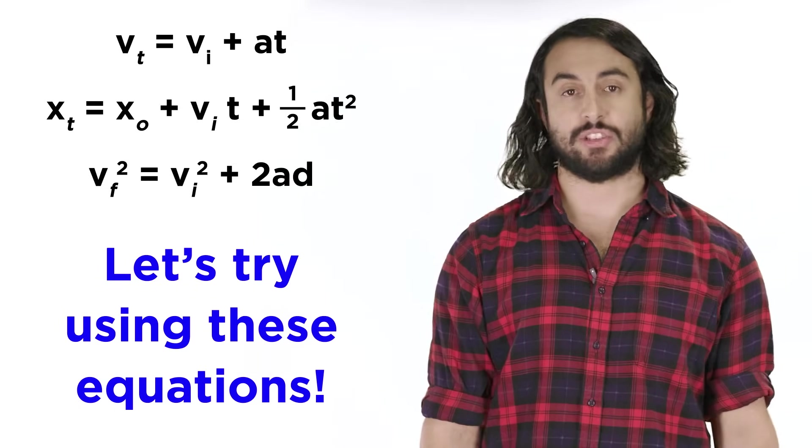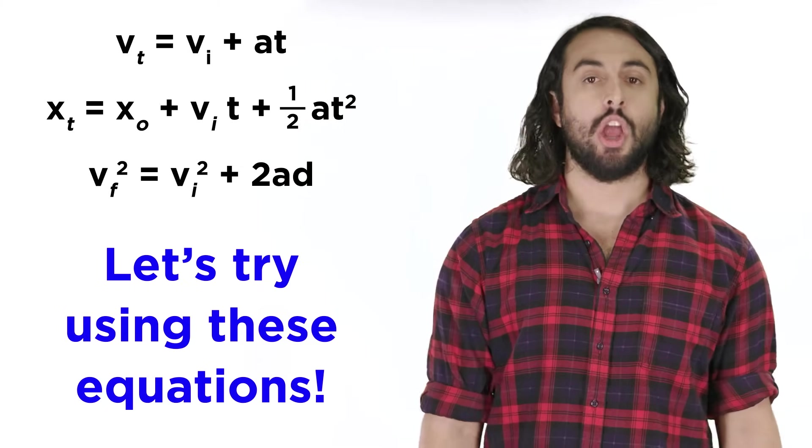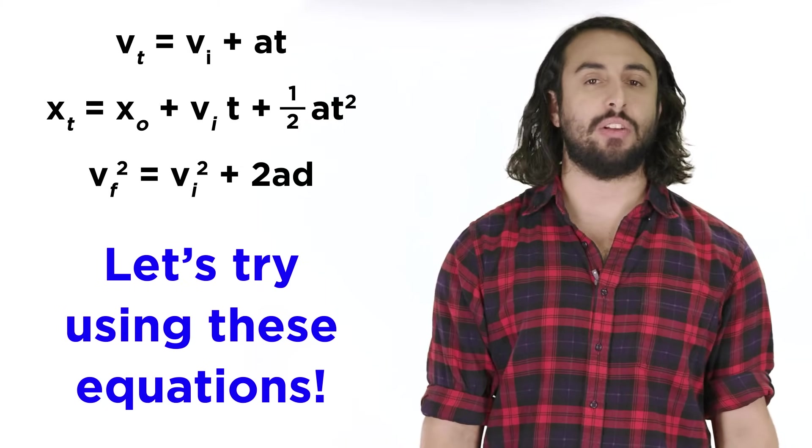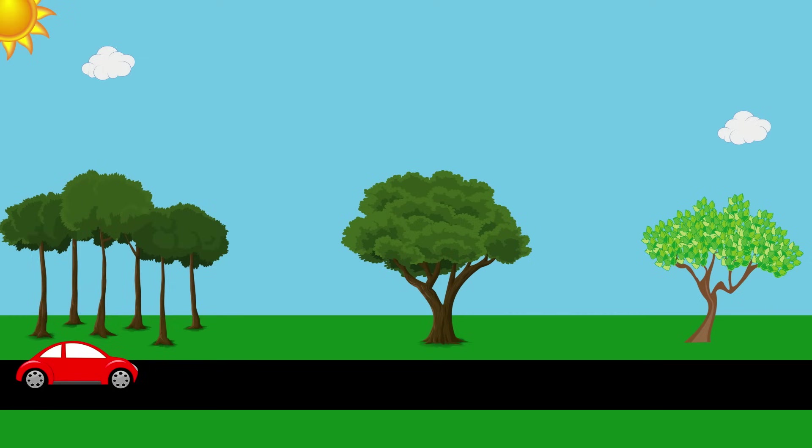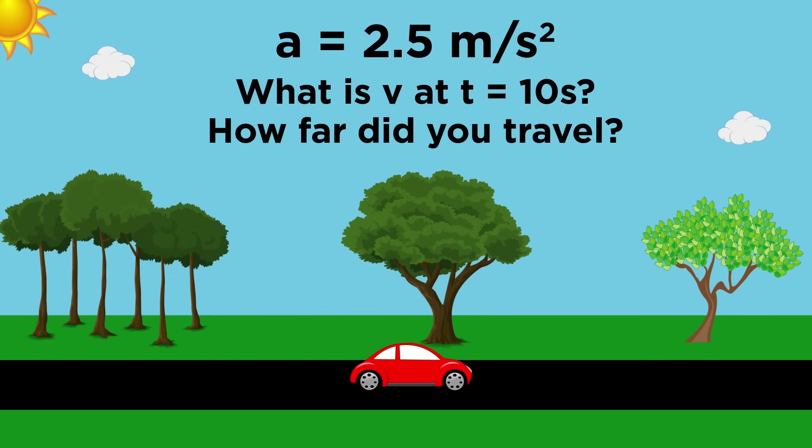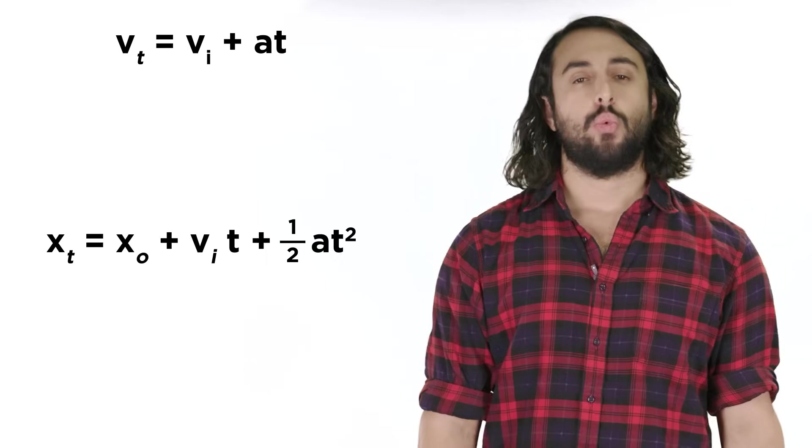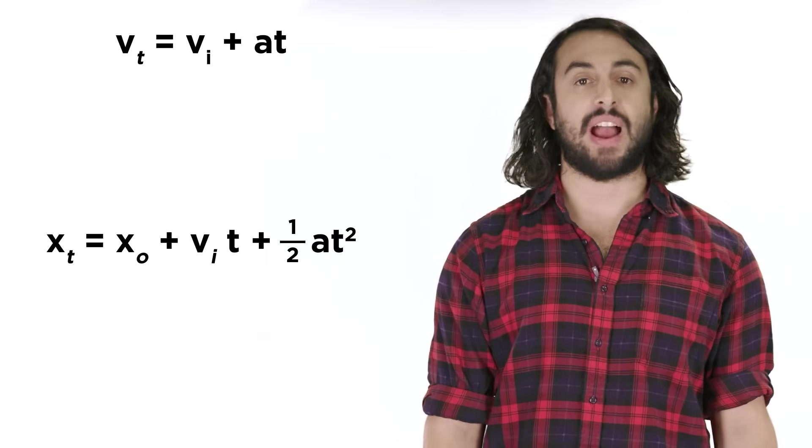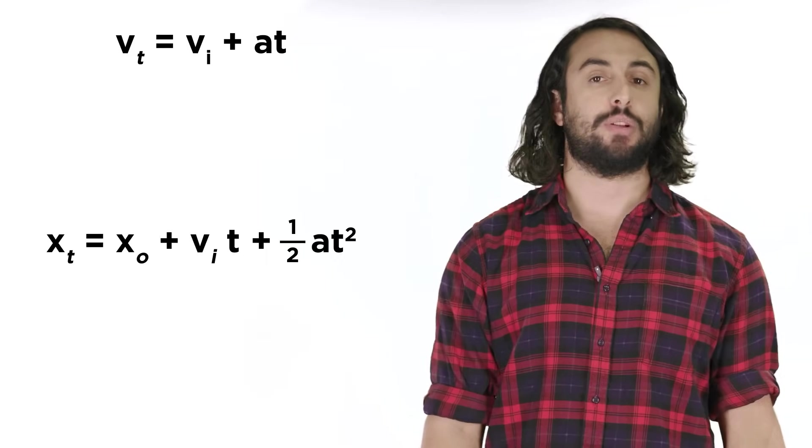Now that we have these equations and know what all the variables mean, we are ready to apply them to real examples of motion. Say you get in your car to drive to the supermarket. While at rest, you place your foot on the gas and apply a constant acceleration of 2.5 meters per second squared. What will your velocity be after ten seconds, and how far will you have traveled in that time? We can use these two equations to find the answers. We just have to plug in what we know.